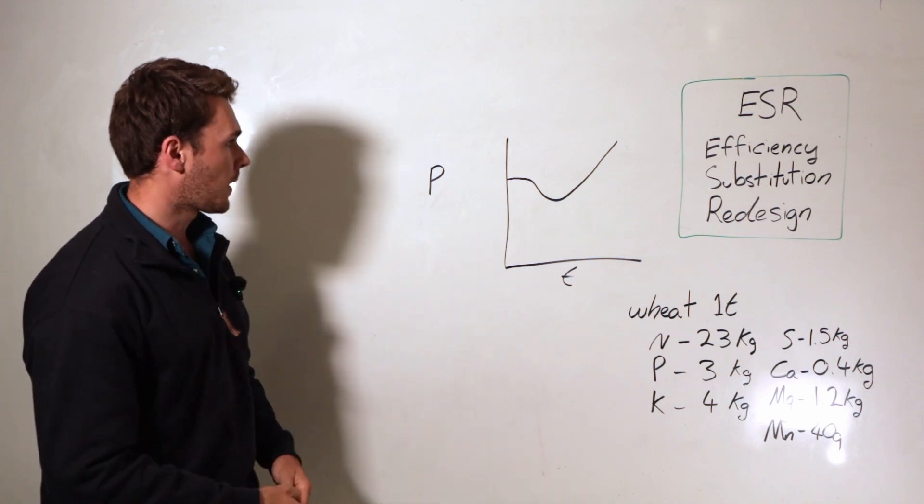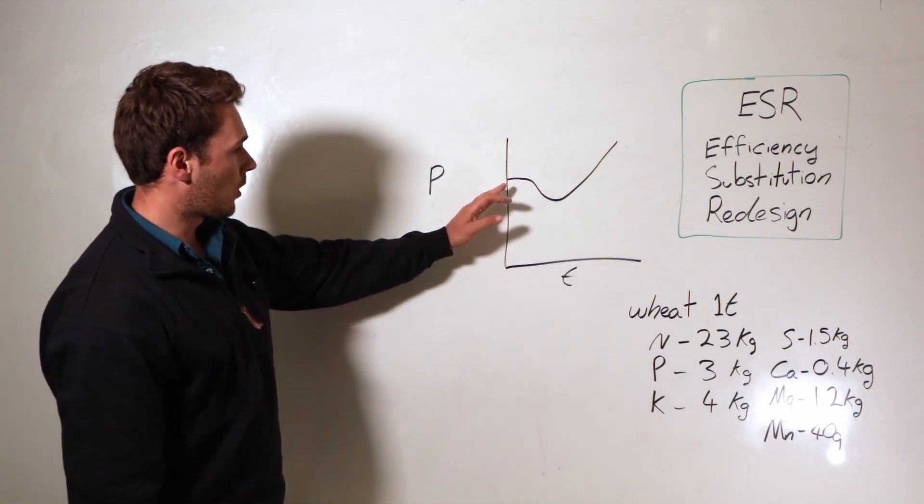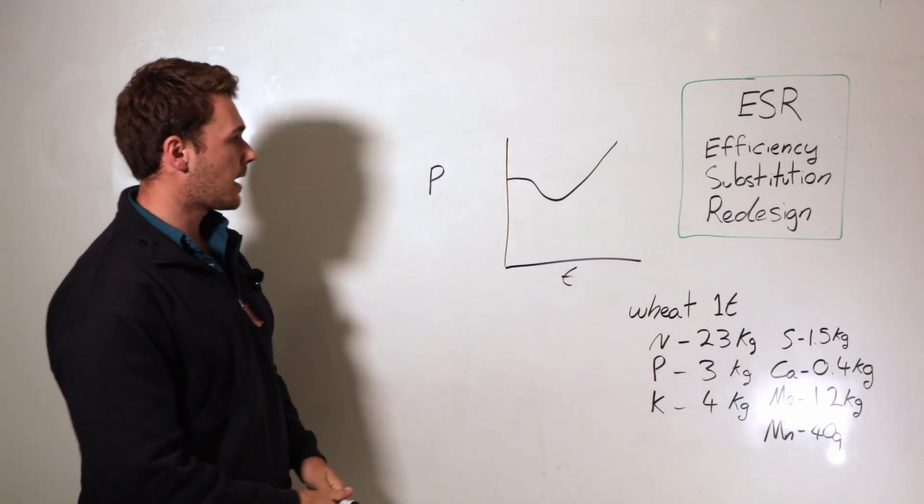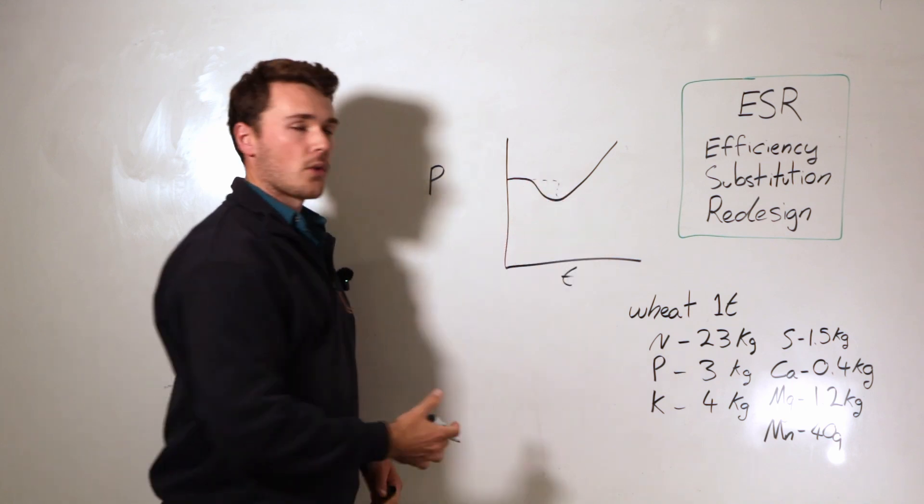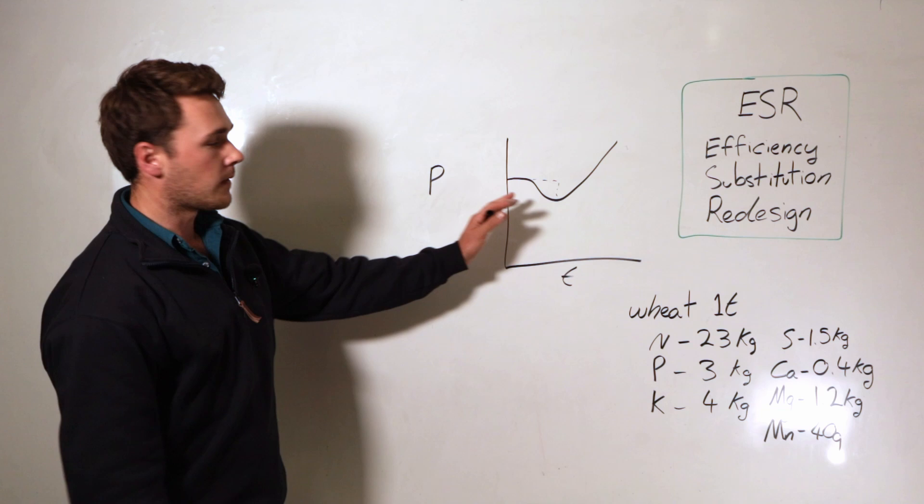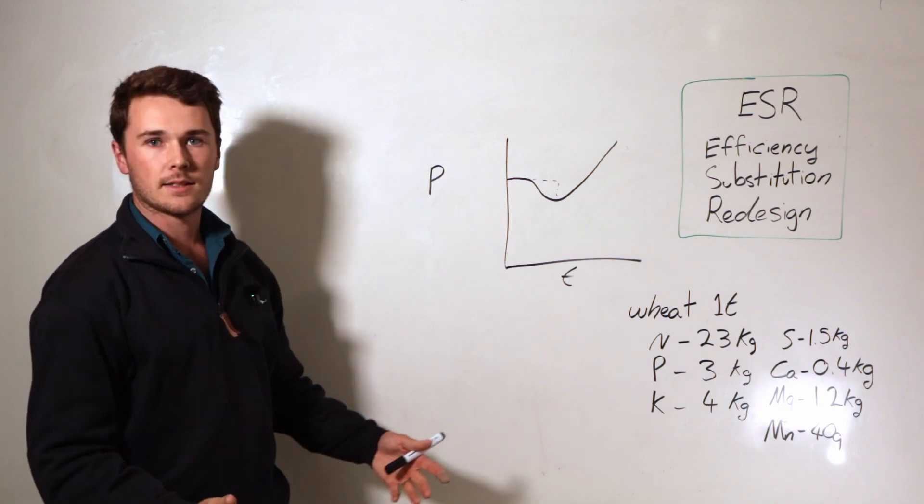So typically what we see is people transition and they get this drop in their productivity or their profit or the yield in the first few years. And then they go, it doesn't work. This thing's rubbish.